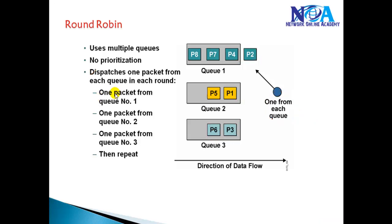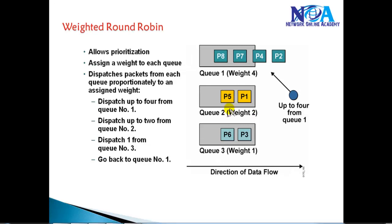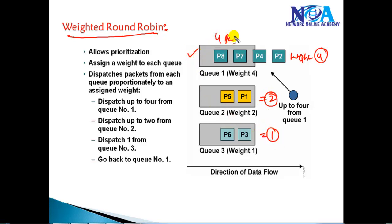The major drawback of round robin is that voice traffic may have to wait for the next packet until other queues finish. For such scenarios we use weighted round robin. In weighted round robin, we apply weights — for example, weights of four, two, and one — so Q1 sends four packets for every one from Q3, or twice what Q2 sends. This lets you define a weight for a specific queue so it sends more packets compared to other queues.